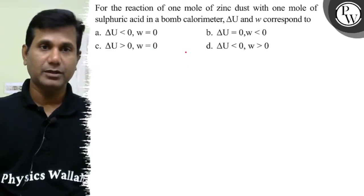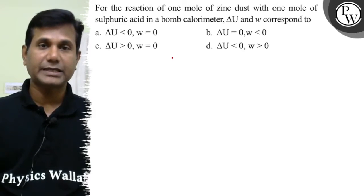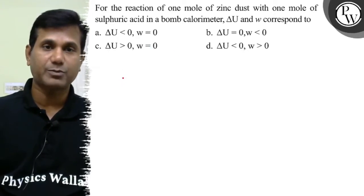Hello, let us see this question. For the reaction of one mole of zinc dust with one mole of sulfuric acid in a bomb calorimeter, delta U and W correspond to it.